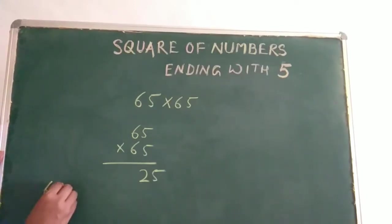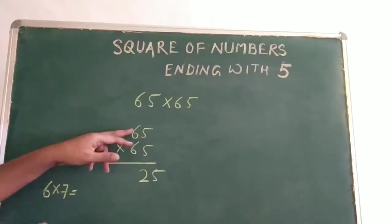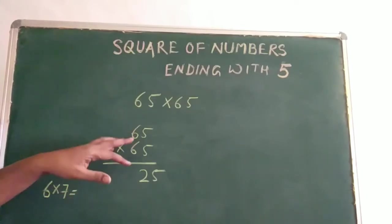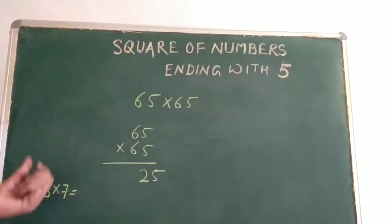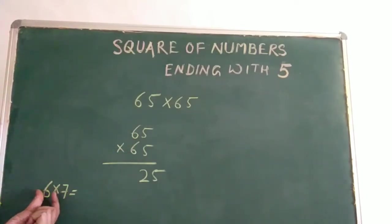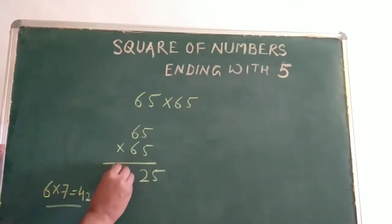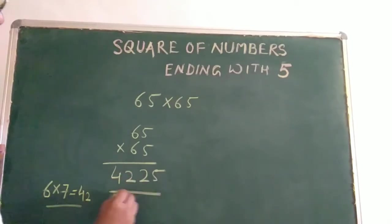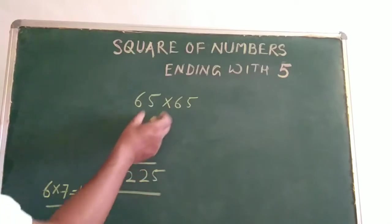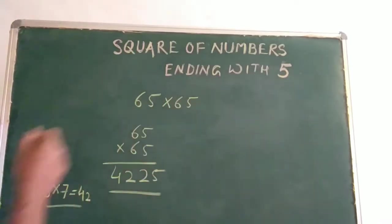So we multiply 6 and 7. 6 times 7 is 42. So we are writing 42 here. So we are getting the number 4,225. So that is the square of 65.